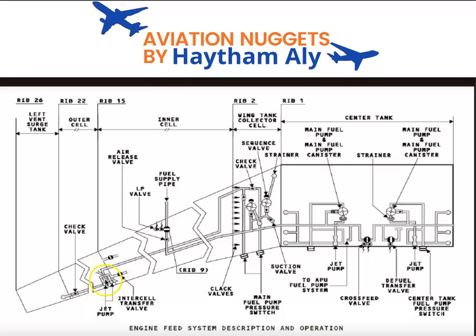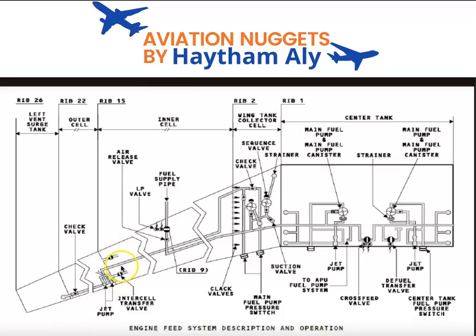The jet pump in the outer cell receives motive force from the wing tank pump and allows any fuel that has surged from the wing tank into the surge tank to return from the surge tank back to the outer cell. Also, the intercell transfer valves are operated by actuators located outside the tank, so that electrical components inside the wing tank are minimized.